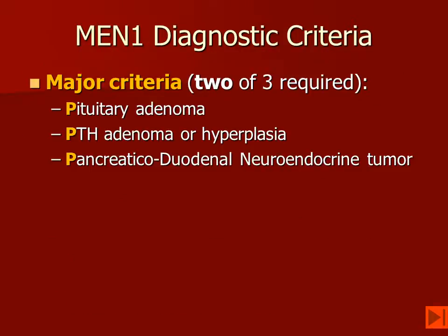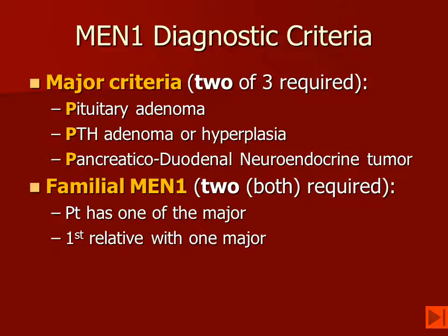Thirty to 75% of patients will have pancreatic or gastroduodenal neuroendocrine tumors, and the most significant of these in terms of morbidity and symptomatology are gastrin-secreting tumors, or gastrinomas. The diagnostic criteria include the major lesions — pituitary adenoma, parathyroid disease, and pancreatic or duodenal neuroendocrine tumors — and two of these are required. Familial MEN requires that you have one of the major diseases and a first-degree relative.